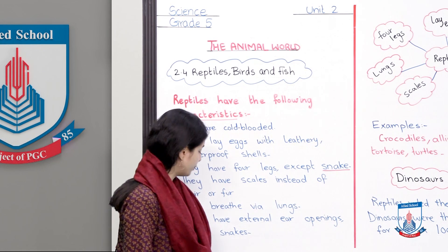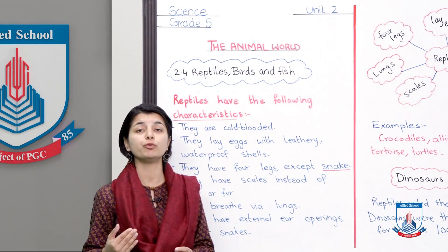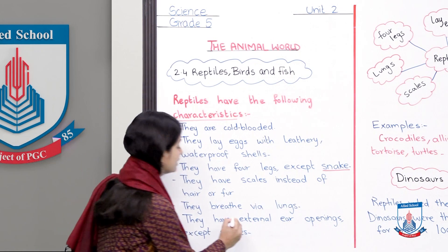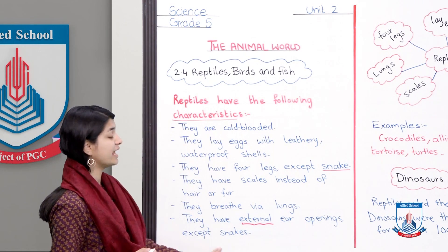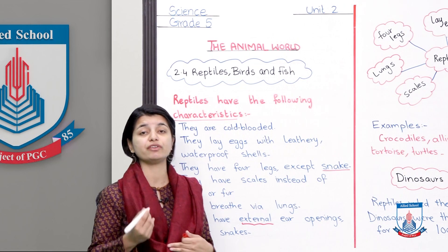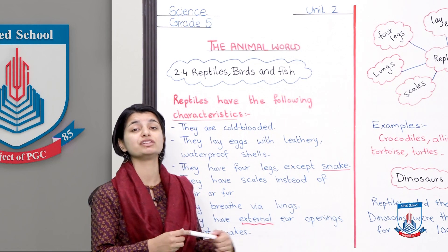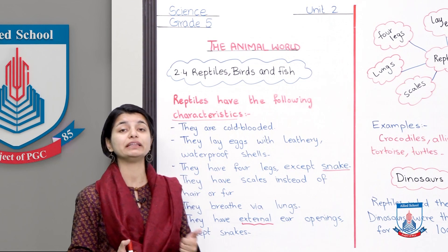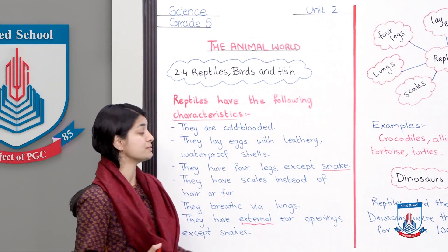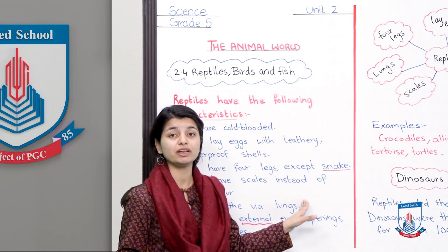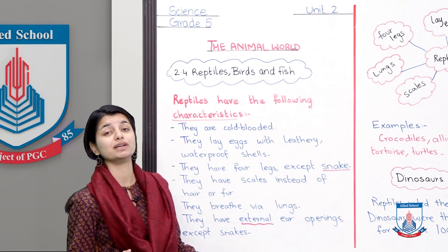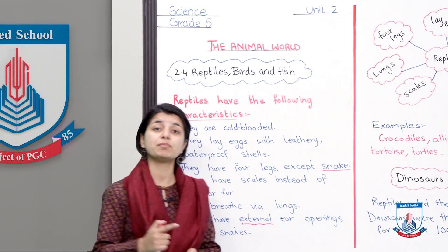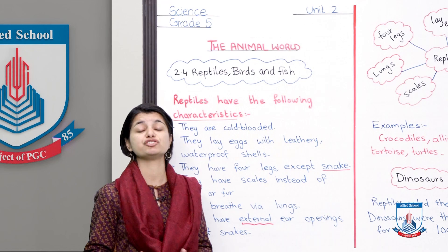They have external ear openings, except snakes. The ear openings of reptiles are external — visible from the outside. Snakes, however, do not have external ear openings. So two characteristics that reptiles have but snakes do not are: four legs and external ear openings. Snakes are still reptiles, but these two things are absent in them.